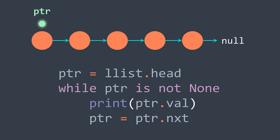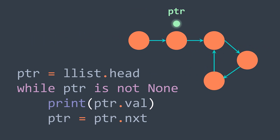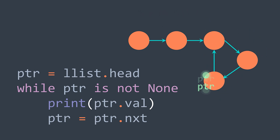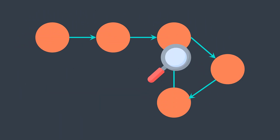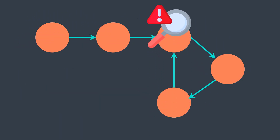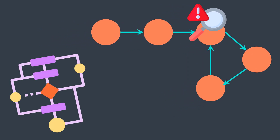The classic way to traverse a linked list is to put a pointer at the head and use a loop that keeps running while the pointer is not null. But what if that pointer never becomes null? We would have an infinite loop. This case happens when there is a cycle — when there is a node that points to a previous node. So we need a cycle detection algorithm to avoid the infinite loop.